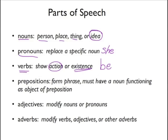Prepositions — we started talking about these early on mainly because we were putting brackets around the prepositional phrases to eliminate them when we were looking for the subject and the verb. Remember that a preposition must exist inside a phrase — it's not a preposition if it doesn't have a phrase. Inside that phrase we have to have a noun functioning as the object of a preposition, which we usually abbreviate as OP.